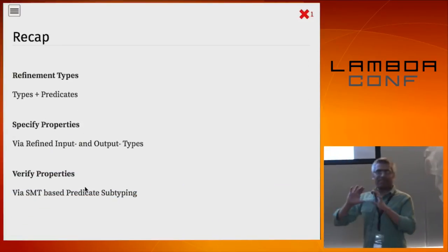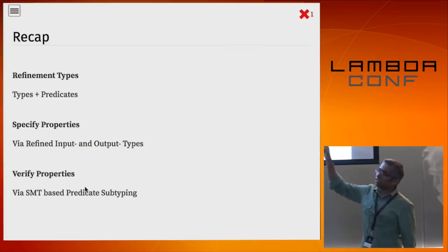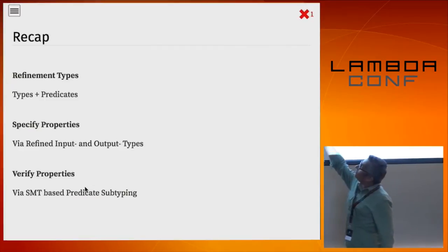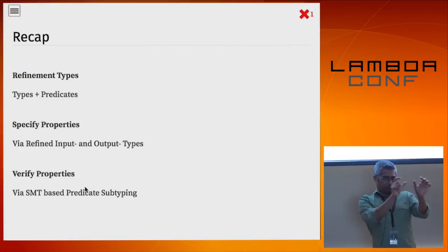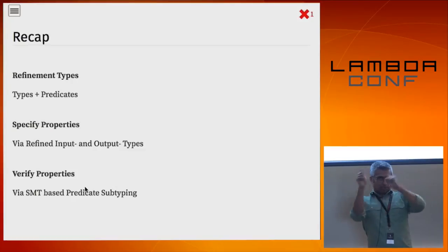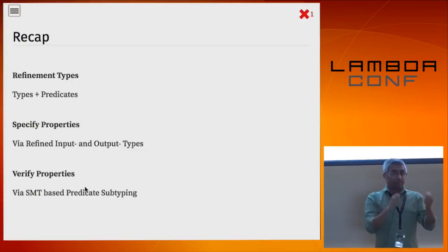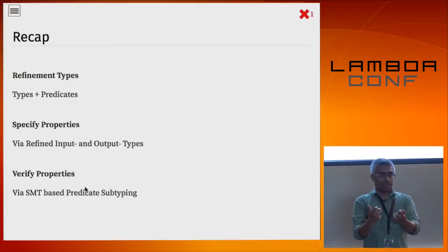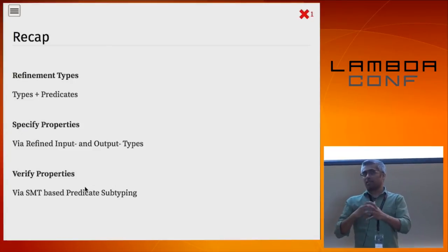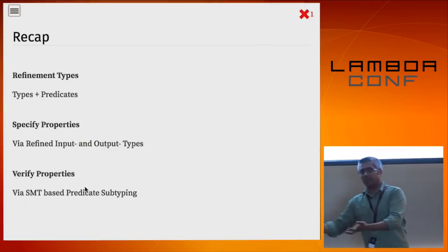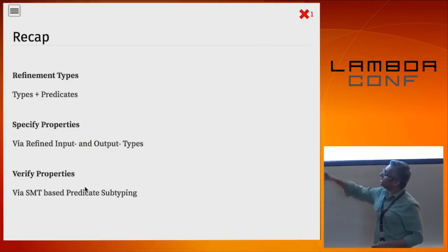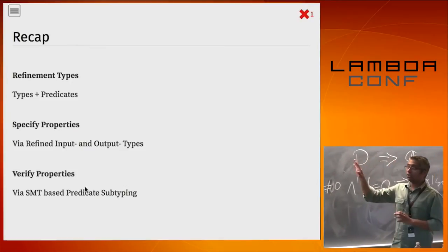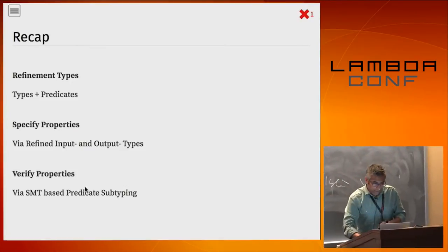Quick recap of this first section: I just showed you what a refinement type is — it's a type with a little predicate slapped on. The way we specify properties is by writing functions with either input types or output types that are refined. If the input type is refined, you must call the function only with values satisfying that property. If the output type is refined, the function is guaranteed to produce values satisfying that property. The machinery of checking all this is handled by the SMT solver.